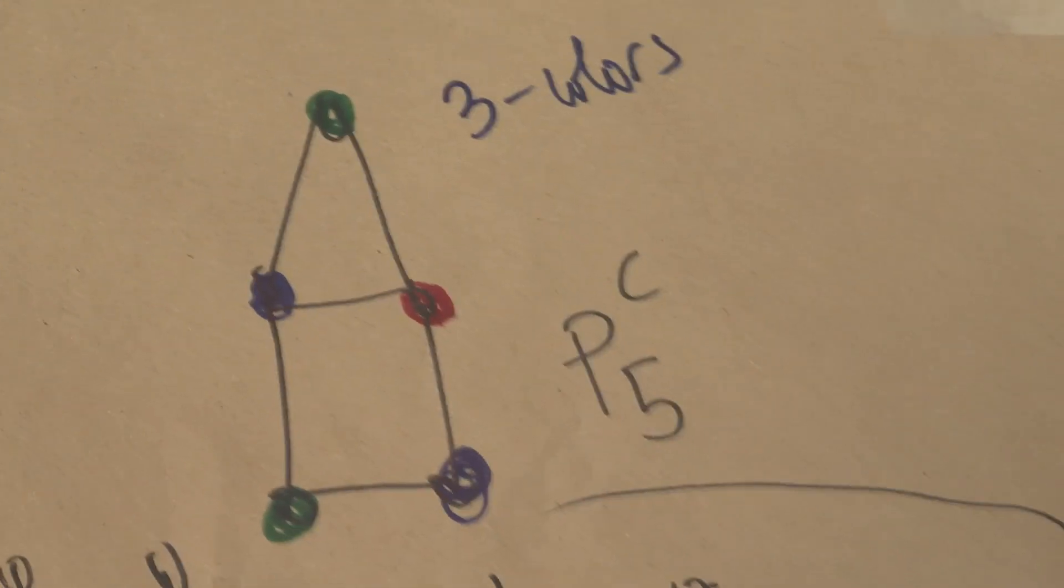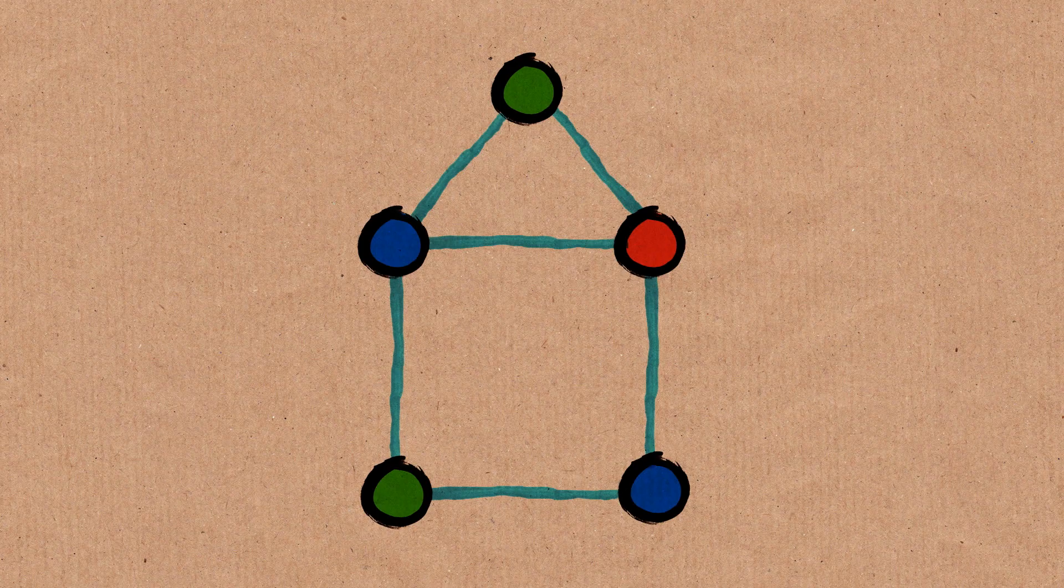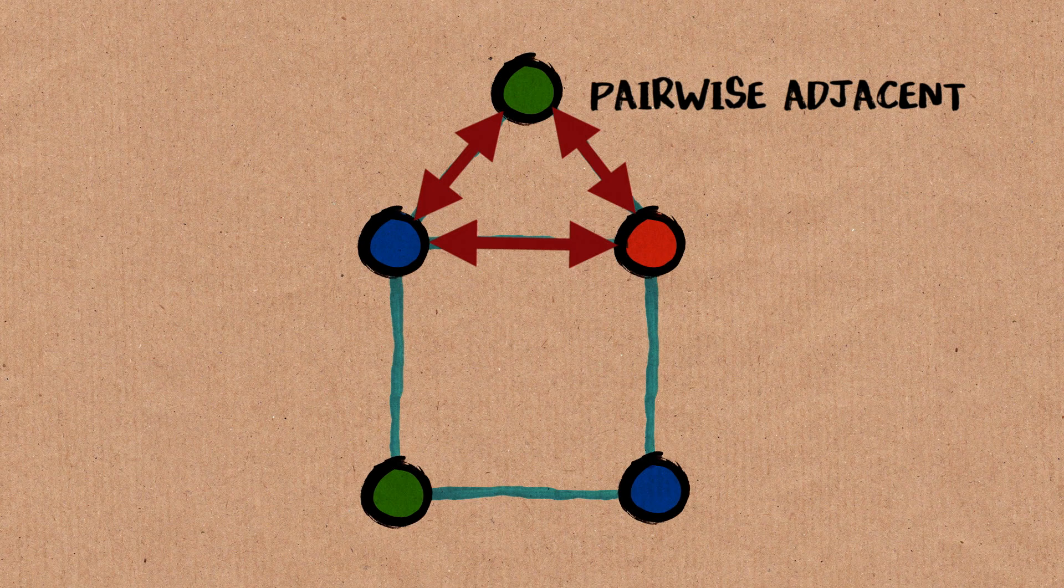And you can see that you couldn't do it with fewer colors than three because you have these three vertices all pairwise adjacent. So you have to use three.